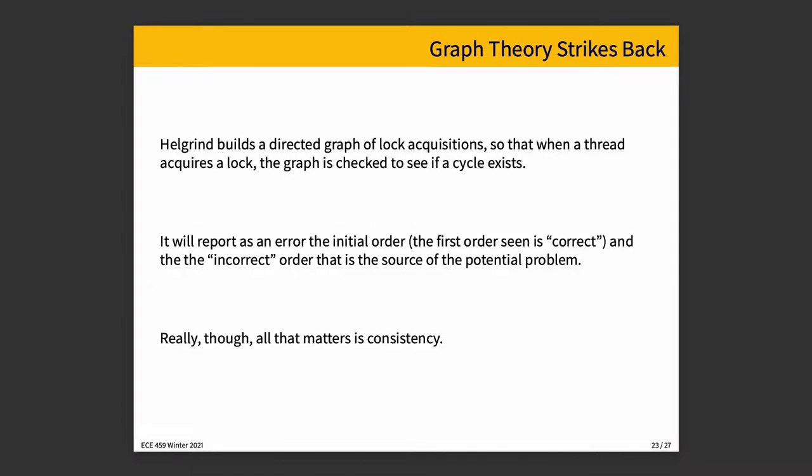How does this work internally? Well, Helgrind builds a directed graph of lock acquisitions, and every time a lock is acquired, it adds an edge to that graph and checks to see if a cycle exists. If a cycle exists, that indicates there is a potential for a deadlock, which we do not want.